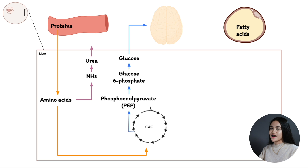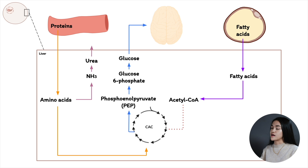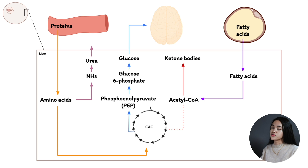Fatty acids are also mobilized and oxidized to acetyl-CoA. However, acetyl-CoA cannot enter the citric acid cycle because oxaloacetate levels are low — it's being diverted to gluconeogenesis. The buildup of excess acetyl-CoA is used for ketone body formation. Ketone bodies are exported to muscle and brain and become an alternate energy source.